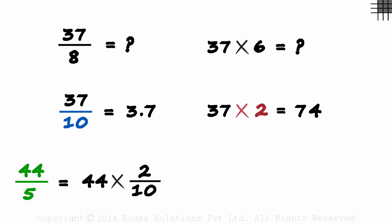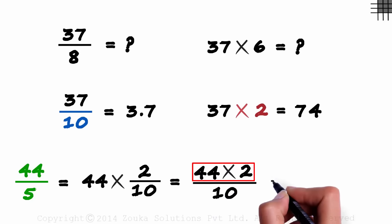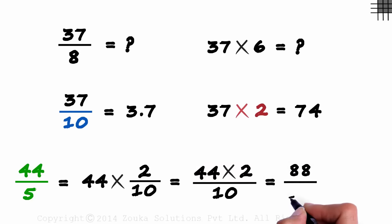And why did we do this? It's because multiplying with 2 and dividing by 10 are relatively easier operations. So this will equal 44 times 2 divided by 10. 44 times 2 is 88, and we divide it by 10. 88 over 10 can easily be written as 8.8.